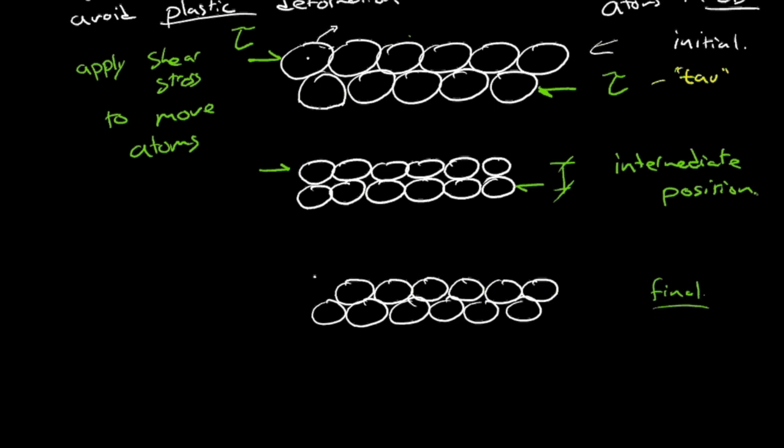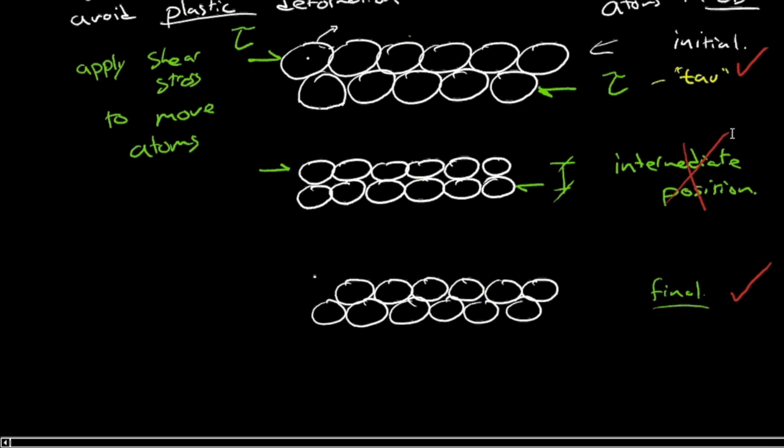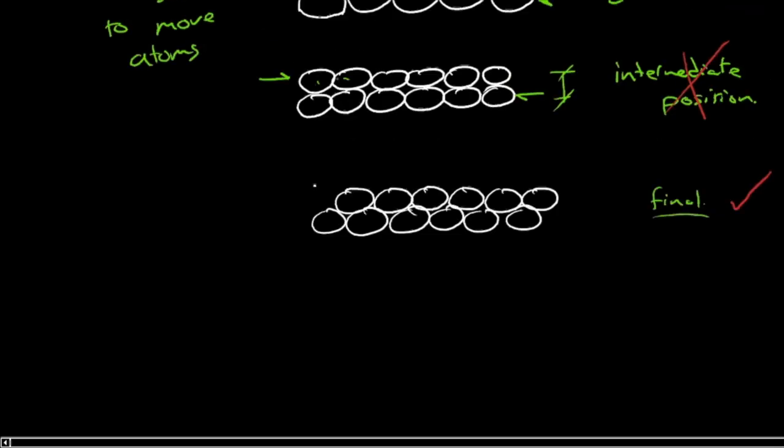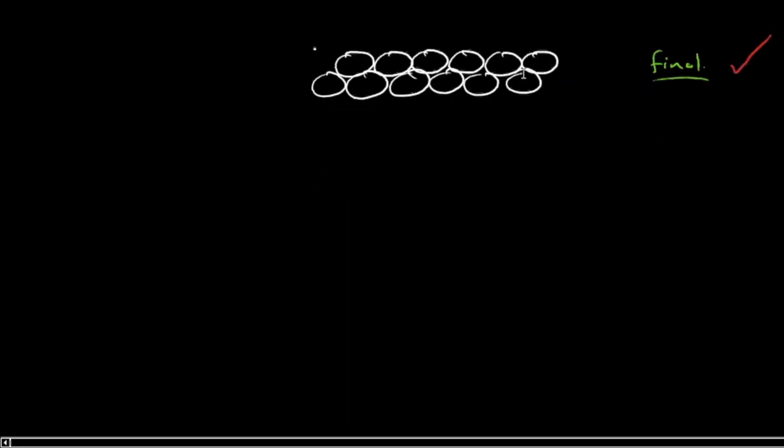Intermediate position, so is that what happens? This is actually partially correct. Let me get my red pen out. And I'll say, well, that's correct, that's how they start. And this is correct, that's how they end. But this is wrong. That's not what happens to them in the middle. In fact, there's a way that they move, and it's not all the atoms. It's not all these atoms moving at one time.